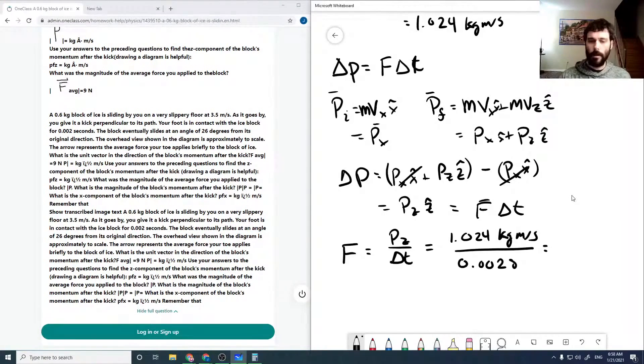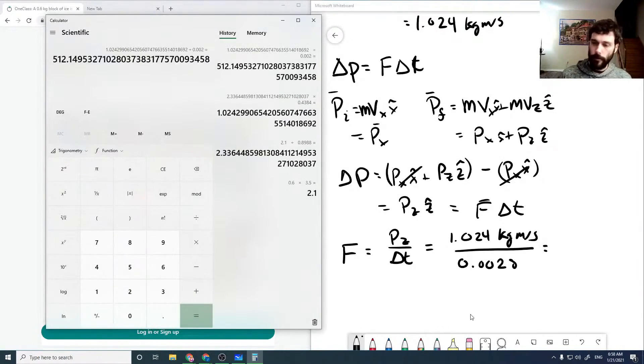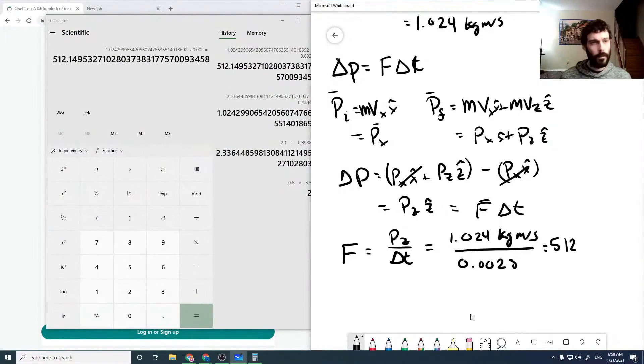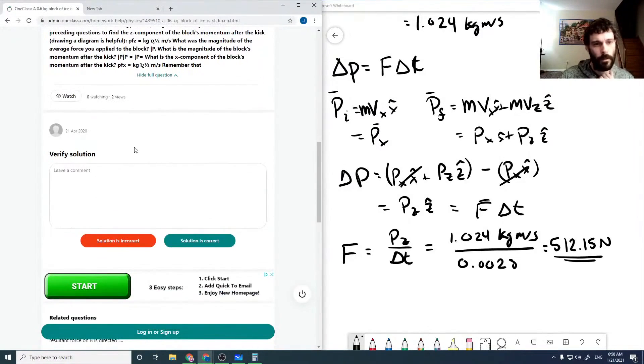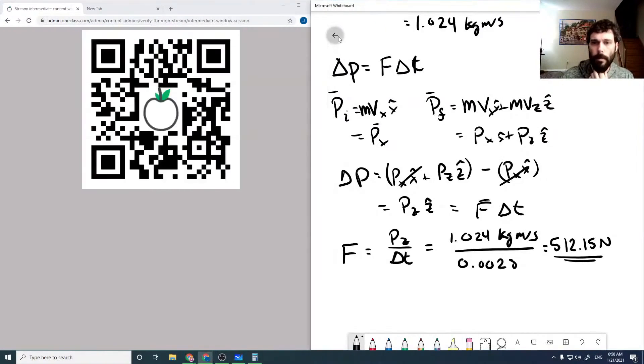And so then this comes out to be 512.15 newtons. And so then there is the force that we applied to the ice block during that kick. If we check the solution here, there is no solution, so I'm just gonna say it's incomplete.